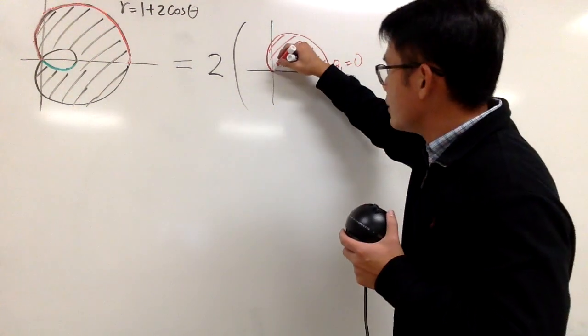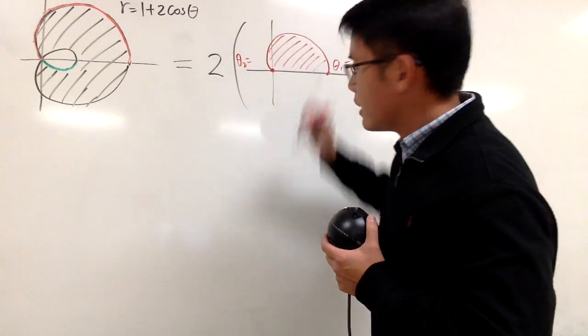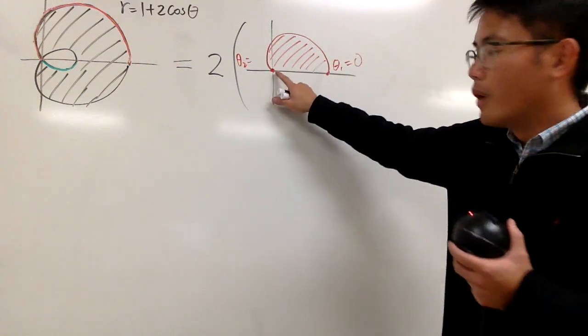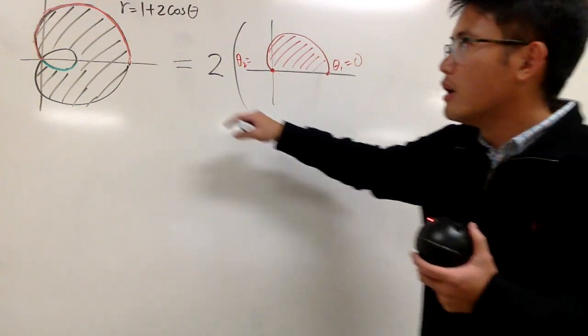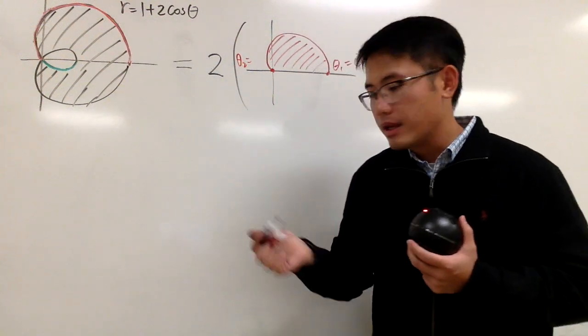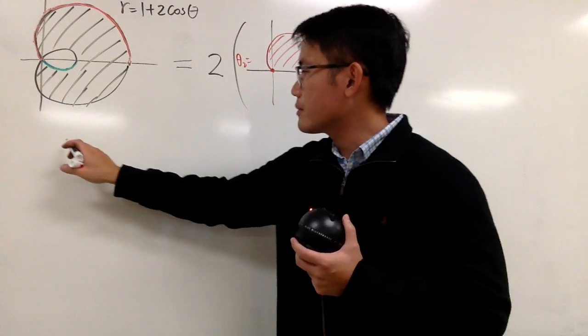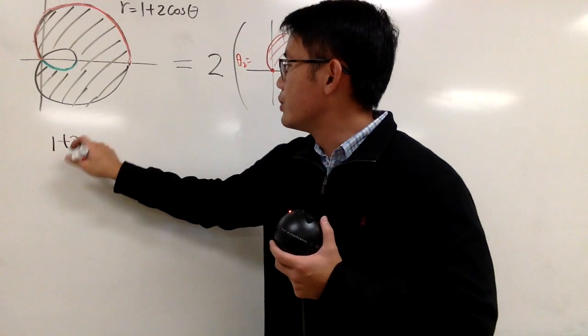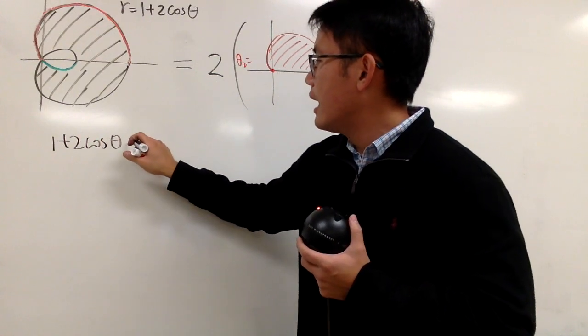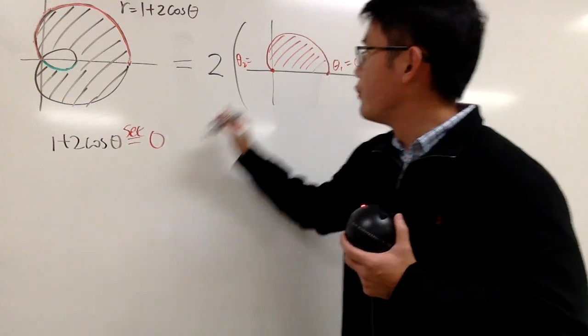Now for theta 2, it's going to be right here. I need to figure out what theta 2 is. And to do so, you have to remember, well, at the origin that's where r is equal to 0 for our polar equation. Therefore, all I have to do is I will just put this down right here.